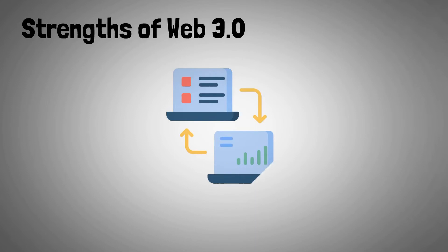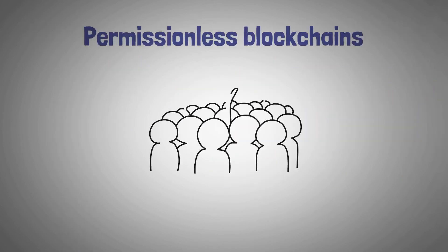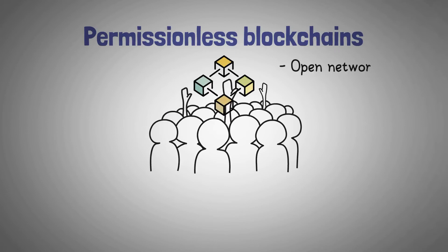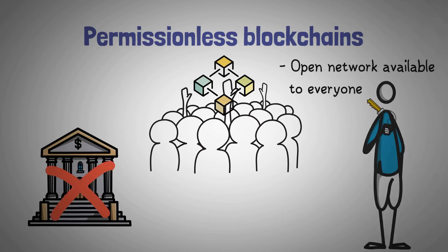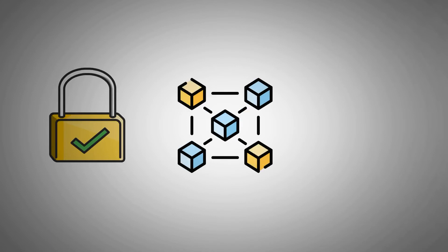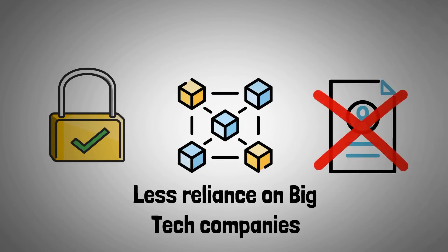The strengths of Web 3.0 include making data interoperable across platforms and IoT devices so information can be accessed from all points on the web. You can utilize permissionless blockchains, reducing limitations imposed by wealth, geographic location, gender, or other demographics. Web 3.0 removes decentralized authority, resulting in self-governance and distributed ownership, and offers increased security due to blockchain technology distribution. It has less reliance on big tech companies, and when making payments, you do not need to share personal information with third parties.